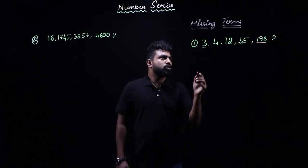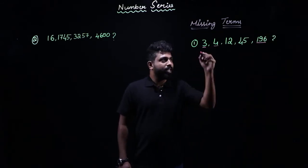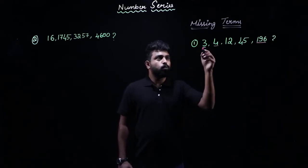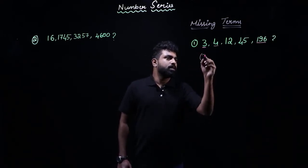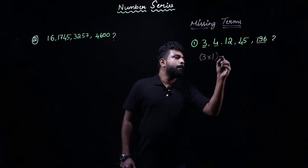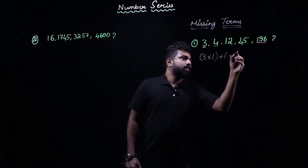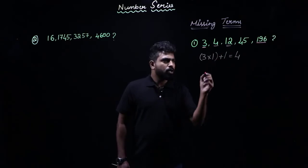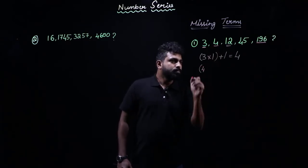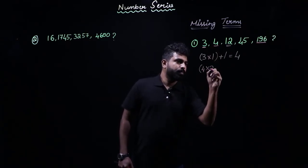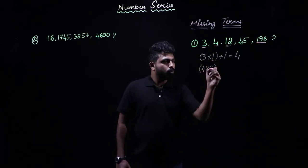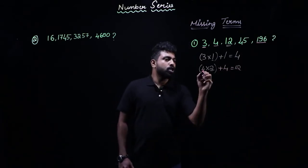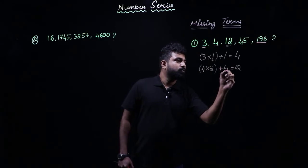So let us start comparing the first term and the next term instead of taking the difference. When we compare 3 and 4, we see that 4 is 1 greater than 3. It can also be written as 3 into 1 plus 1, which is 4. What about 12? If our second term uses the logic 4 into 2 plus 4, that gives 8 plus 4 equals 12.